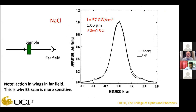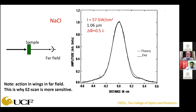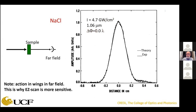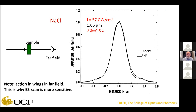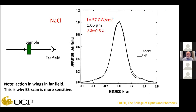When you do that, those wings come up. Lower irradiance versus higher irradiance. Notice all the action is in the wings. The z-scan, using an aperture, looks in the far field at the center section — where there's not much action. In the EZ-scan, you're looking at those wings, where the action is. That's why the EZ-scan is an order of magnitude more sensitive than the z-scan.